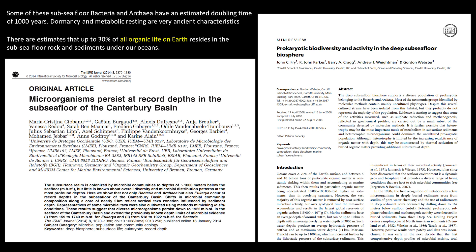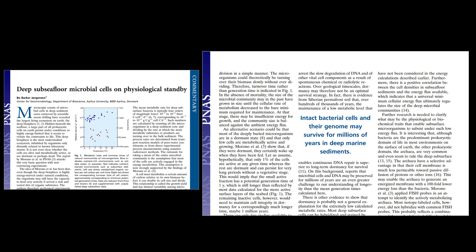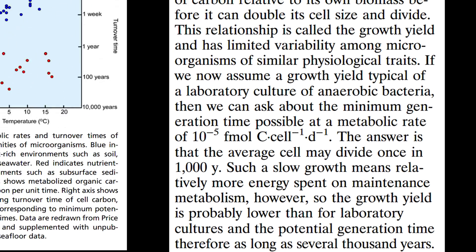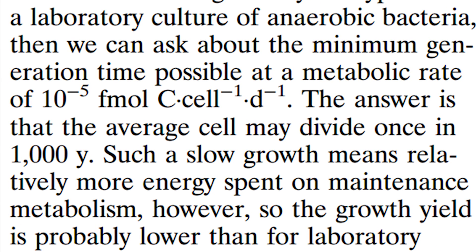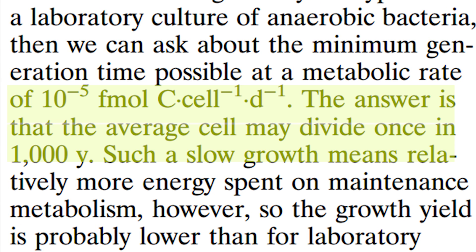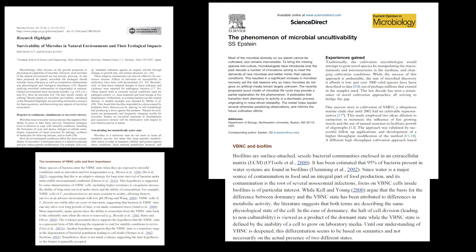If you read the extremophile literature, what you see is that the ability to become dormant as a community is a very ancient ability that occurred in bacterial communities, perhaps even at the very dawn of life on Earth. There are estimates that up to 30% of all organic life on this planet isn't even on the surface — it's buried in rock in the Earth's crust. When you study some of these organisms, which certainly must be very, very ancient, they have a doubling time of a thousand years. Clearly, the ability to downregulate metabolism and energy expenditure is very old and central to microbial life.